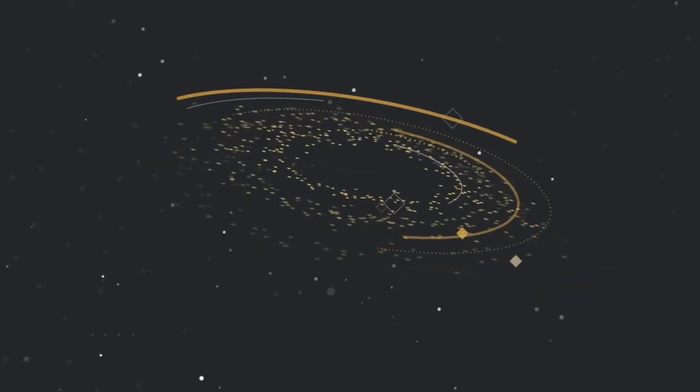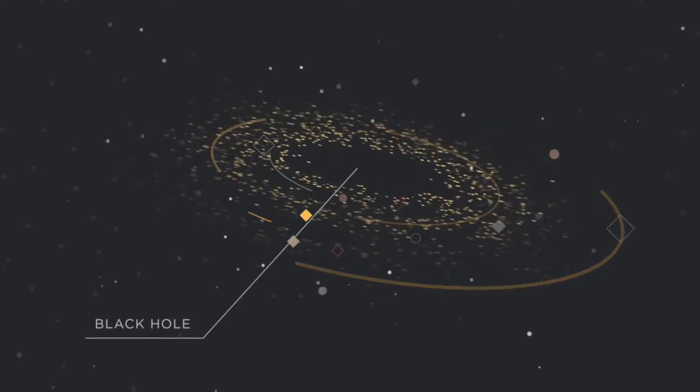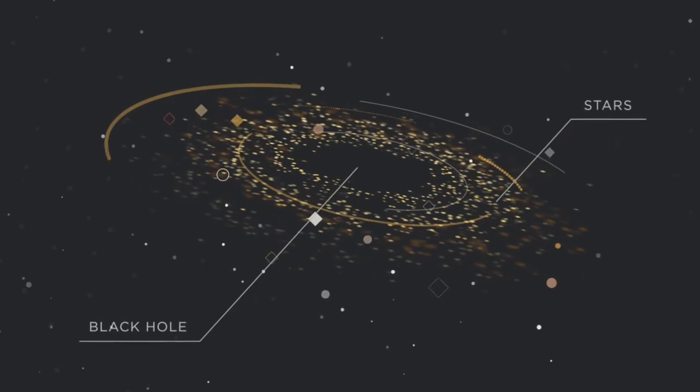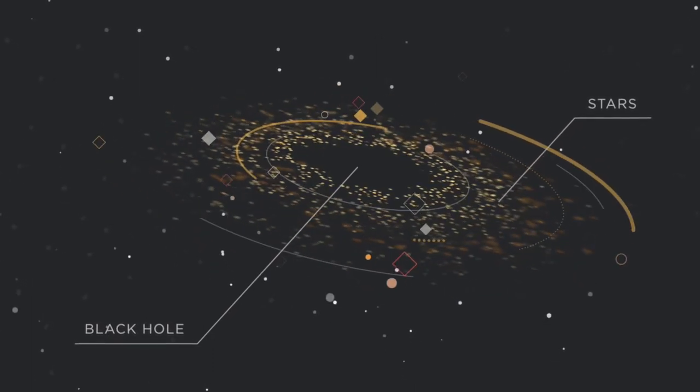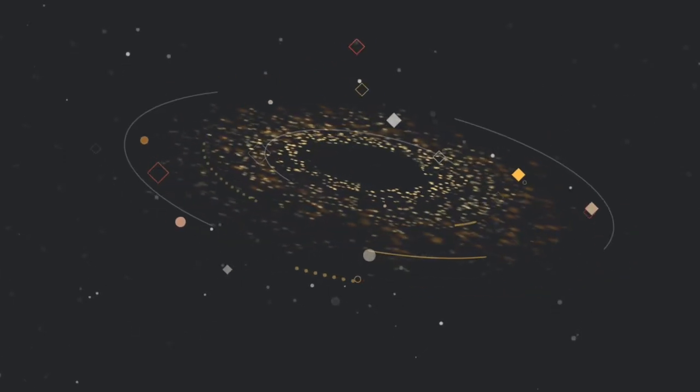For black holes that are not feeding and cannot be observed via their accretion disks, the presence of a black hole can be revealed by the effect of its gravity on nearby objects that are apparently orbiting around nothing. Therefore, astronomers can assume that there is a black hole there.